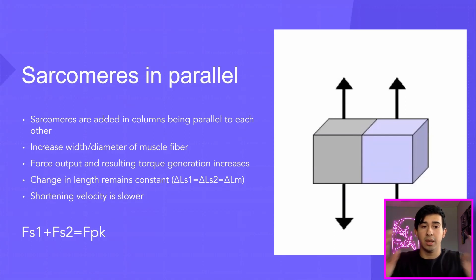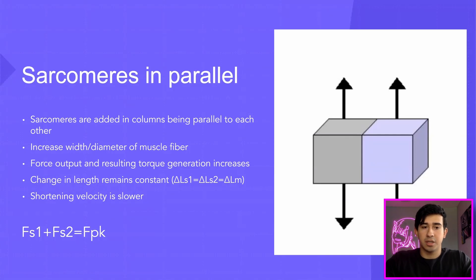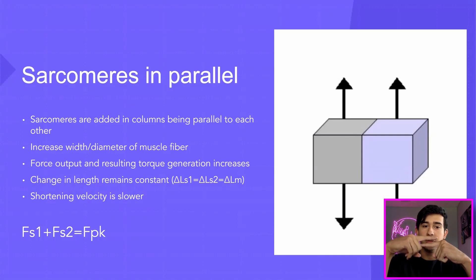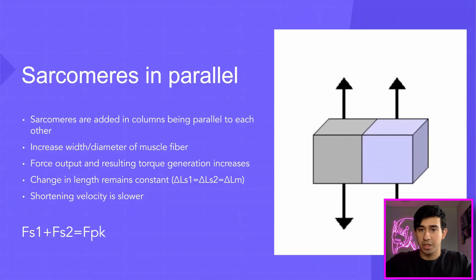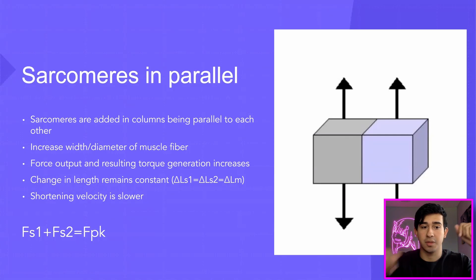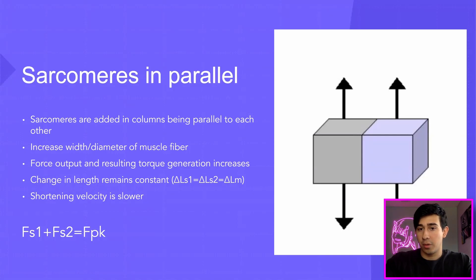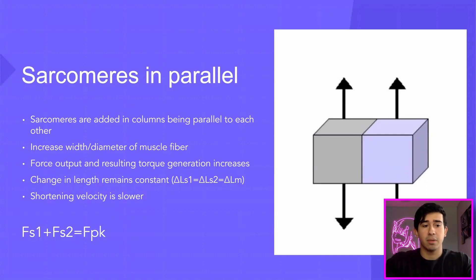In this case the change in length remains constant, because we're not changing point A to point B. The delta symbol just means a change in something — so the change in length of sarcomere one equals the change in length of sarcomere two, which equals the change in length of the total muscle. This means that while we can generate more force, the shortening velocity is actually going to be slower — and we'll go over that more when we talk about sarcomeres in series.